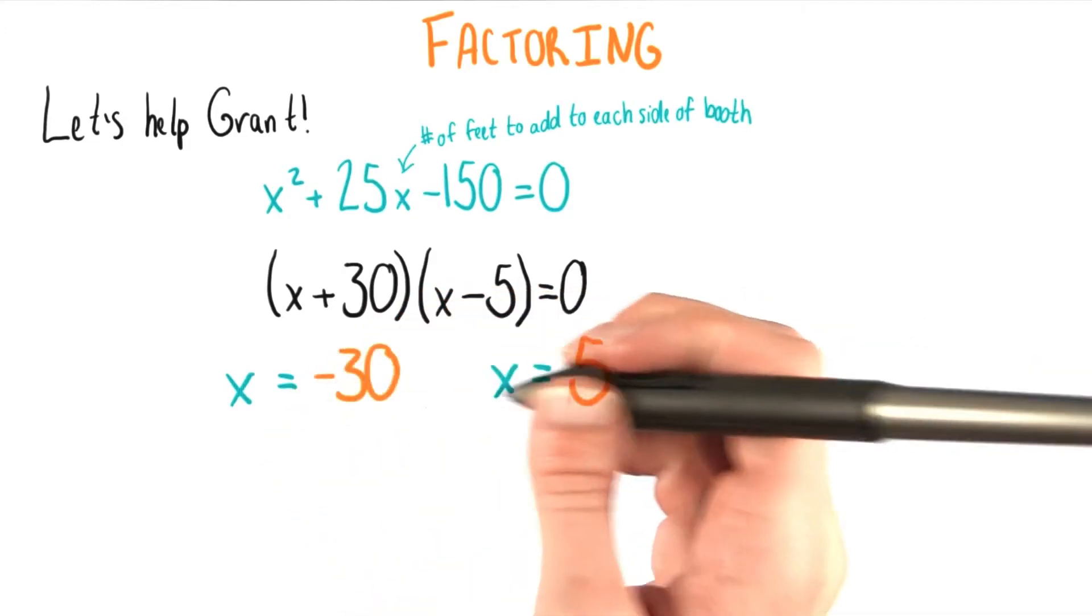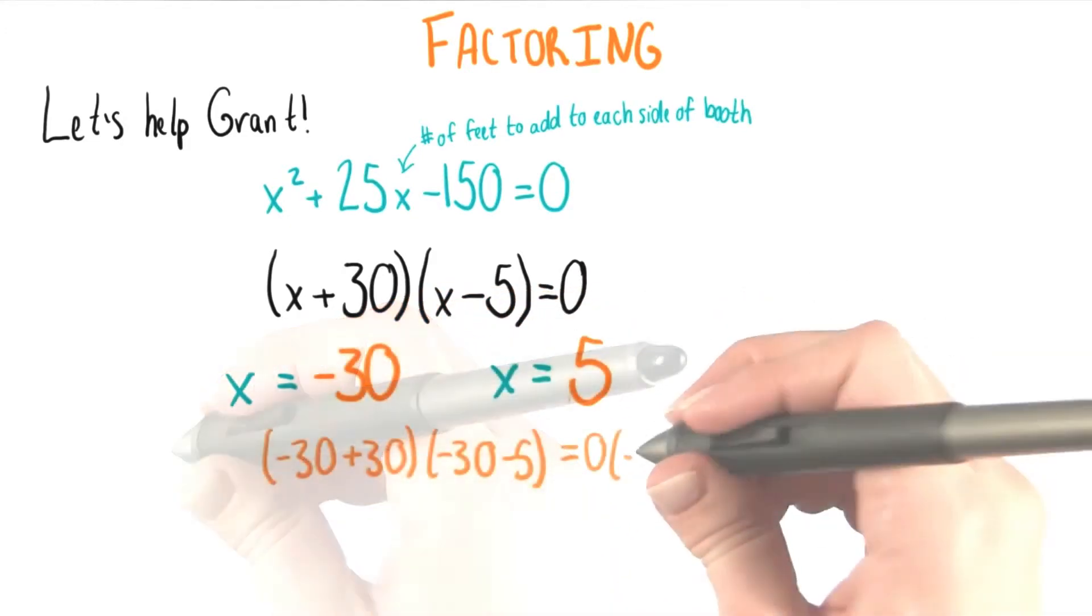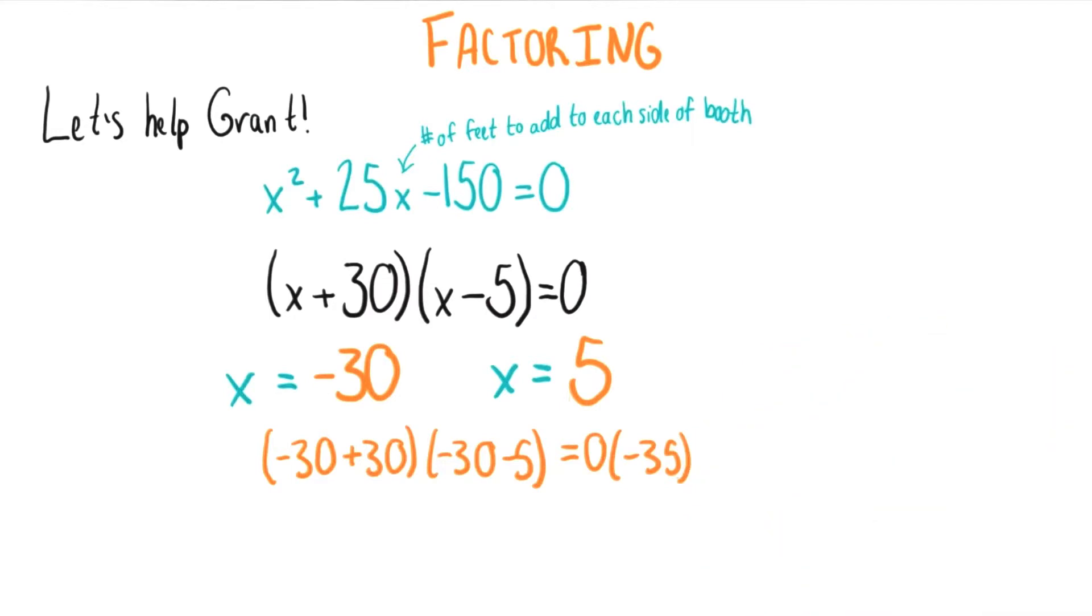The left hand side of the equation, if we plug in x equals negative 30, we'll end up being 0 times negative 35. Even though this factor over here is not 0, anything times 0 is 0. Something very similar happens if we plug in x equals 5. I'll leave that up to you.